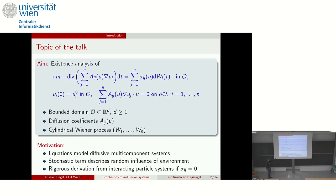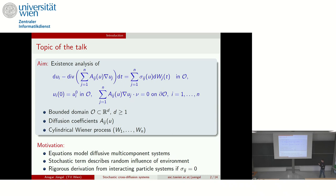The W here are cylindrical Wiener processes with standard assumptions. In these equations, we model multi-component systems. Most models in nature consist of several components — either you are considering populations with different species, or you have gases or fluids which are completely different components, like air or different molecules of different types. The left-hand side takes care of this multi-component character. The stochastic term on the right-hand side is a stochastic forcing describing the random influence of the environment.